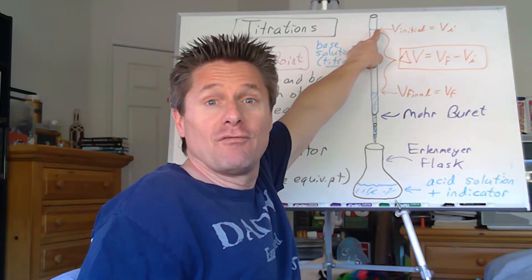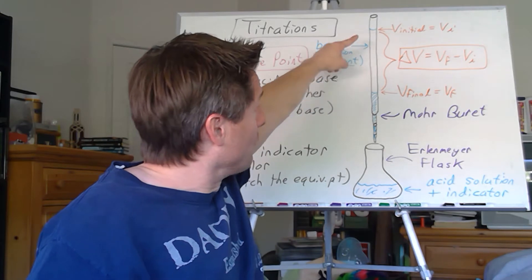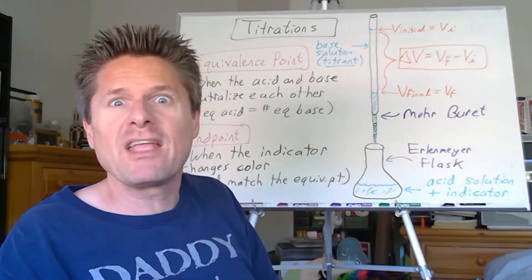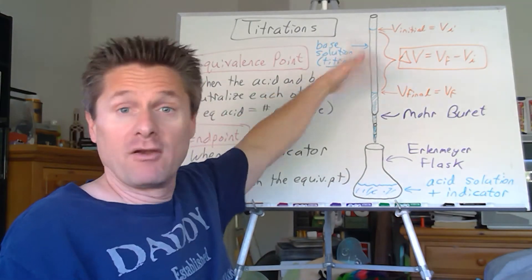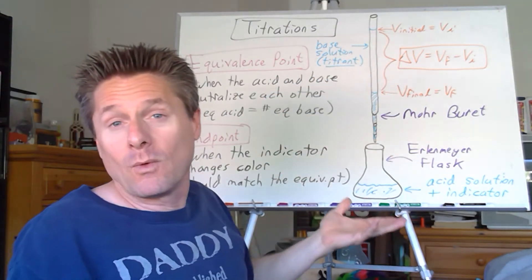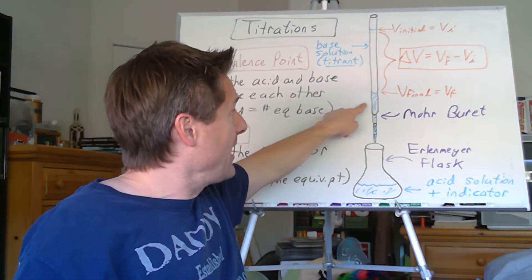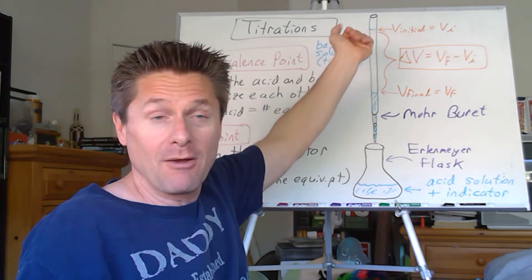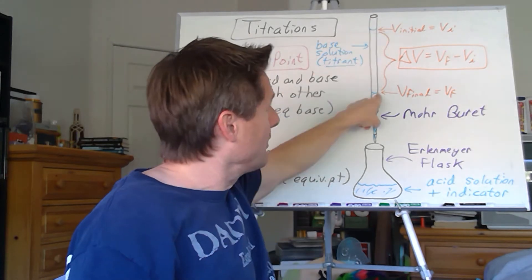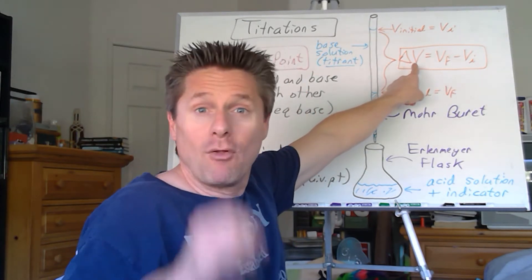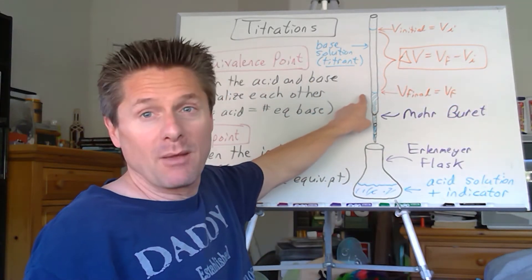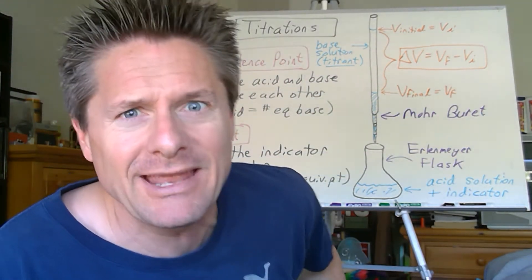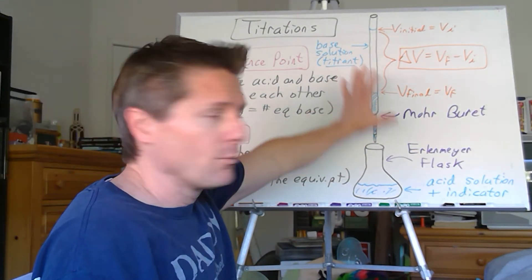So we're going to fill up our burette to some initial volume here and drain it down until we hit the color that we're after. Record that final volume. Because remember, a burette is just a volume transfer device. It's a way to transfer solution of variable amounts. We don't really care where we start. We don't care where we end. So I just start somewhere up towards zero and make sure you end before the 50 line. Record your initial with your burette reading card, record your final and then just subtract them.